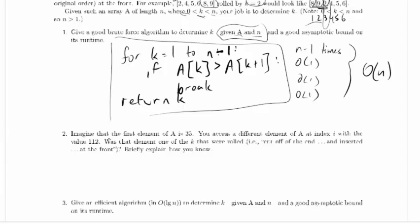Imagine that the first element of the array is 35. You access a different element of A. You know what, let's start sketching this. So the first element of A is 35, and this is index 1.